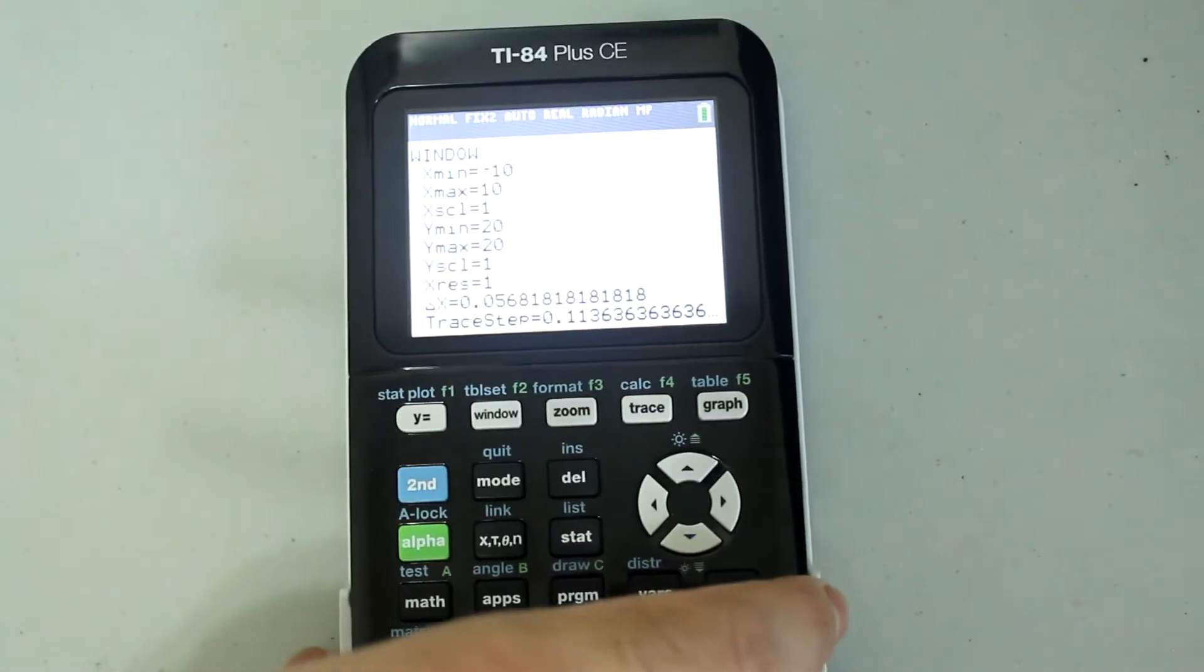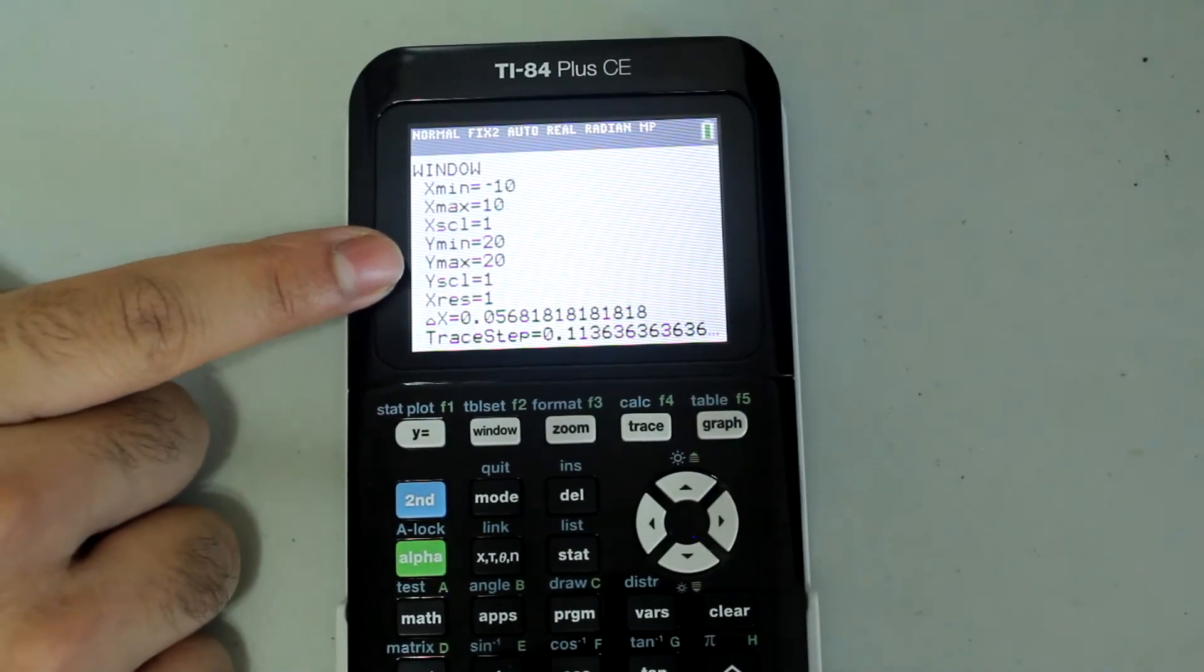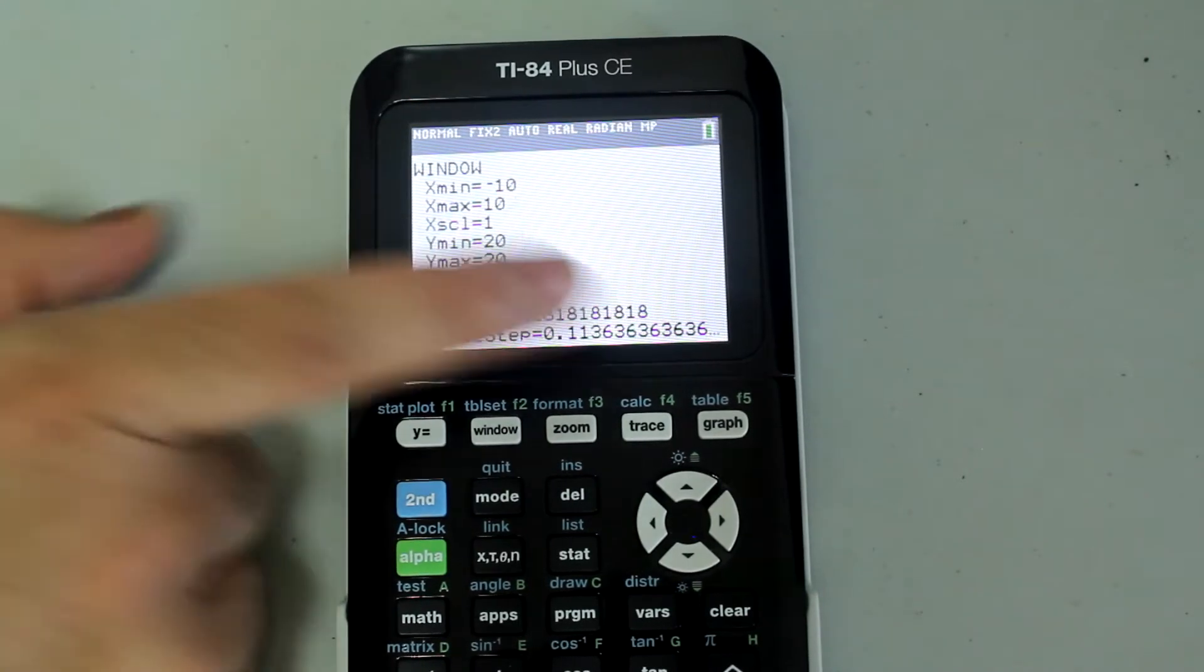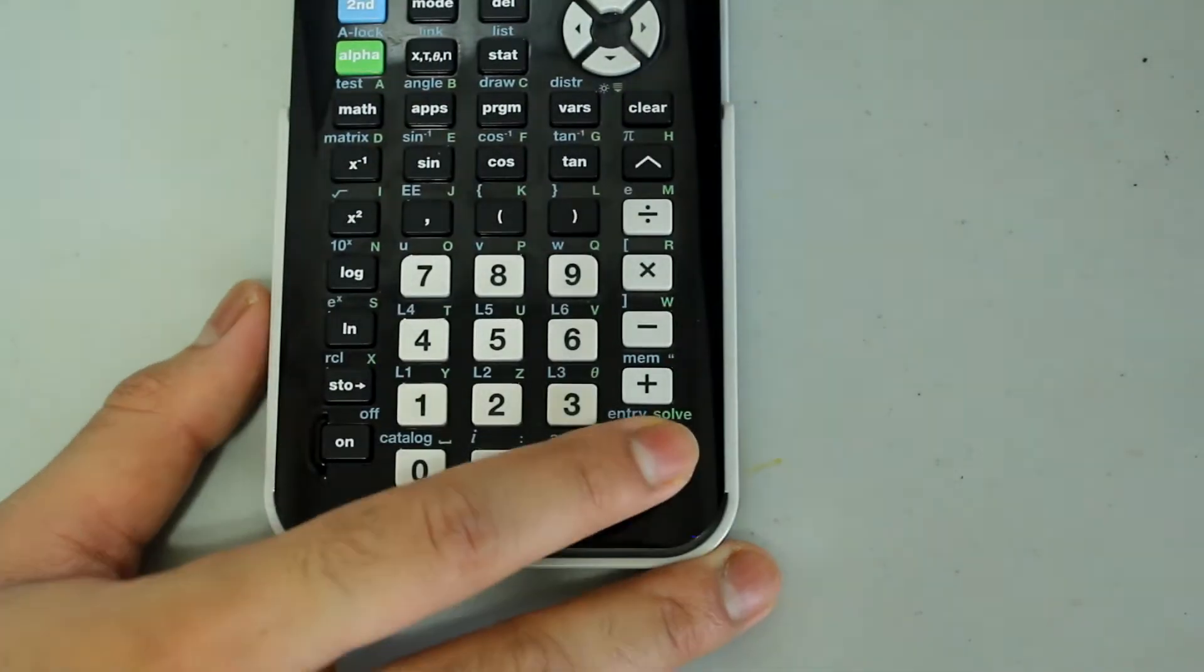And I see another problem. My y max and y min values are exactly the same. If I try to graph with this, I'll still get an error message. So let's exit the message one more time.